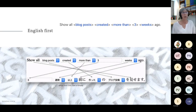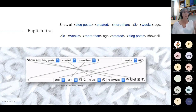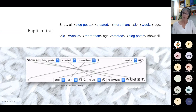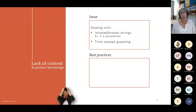This hard-coded text doesn't work with Japanese — you can see from the arrows where the text is leading. The correct Japanese version would be: 'three weeks more than ago created blog posts show all.' So it's very important to take those things into account. The bane of the translator's existence is lack of context, and they often don't have product knowledge. They need to deal with isolated or broken strings — for example, they can be given the text for an entire user interface as sets of words in a spreadsheet. If strings are broken because a variable has been stuck in the middle, they're lacking context, which wastes time and leads to inaccurate translations and lost messaging.